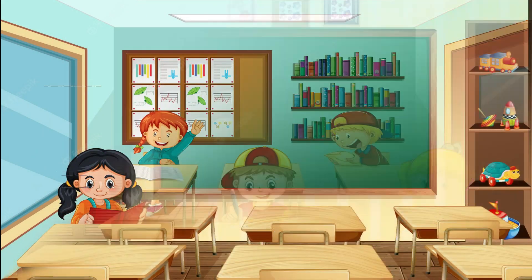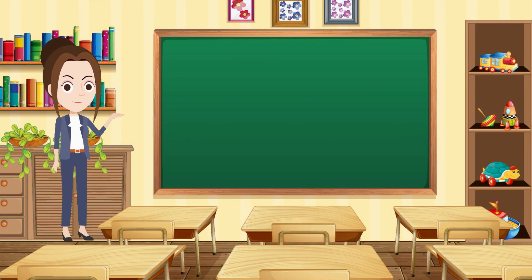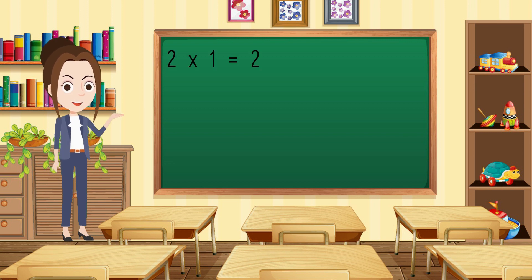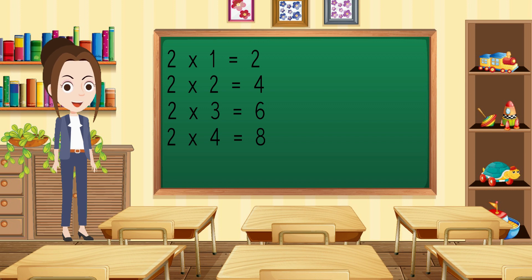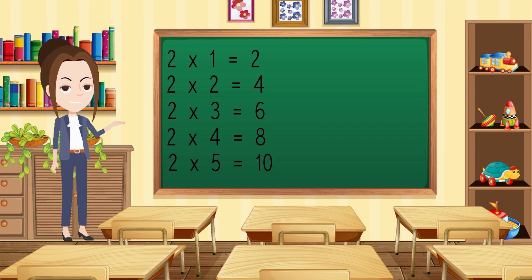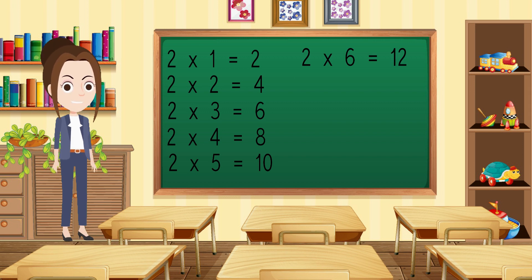So let's repeat again with me. Two ones are two. Two twos are four. Two threes are six. Two fours are eight. Two fives are ten. Two sixes are twelve.